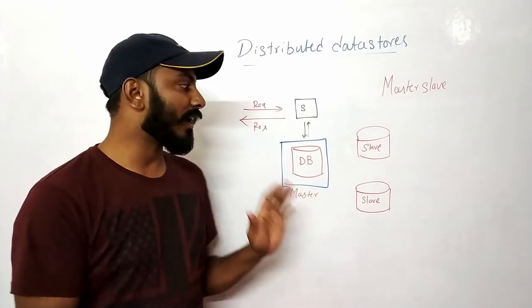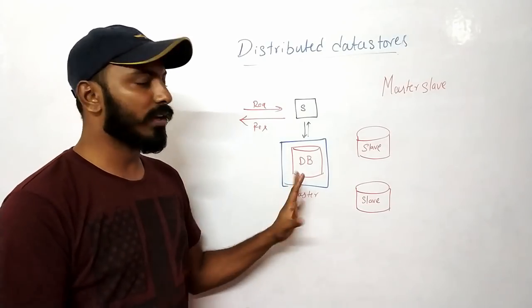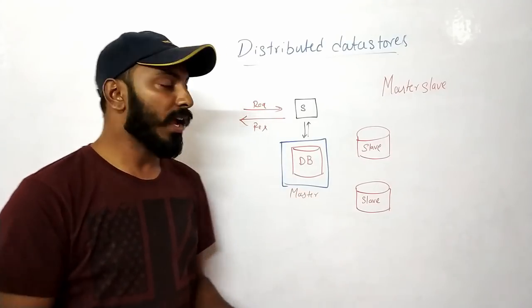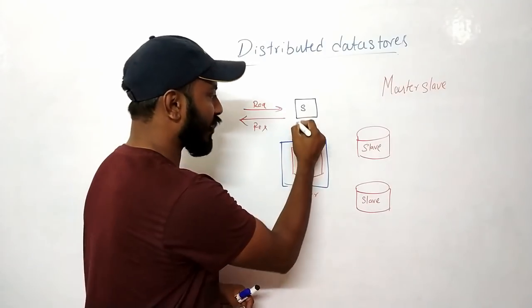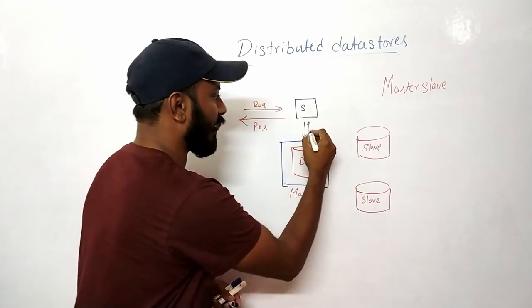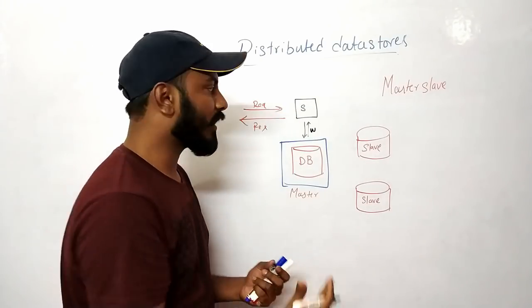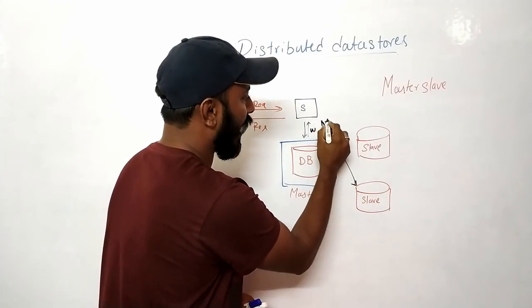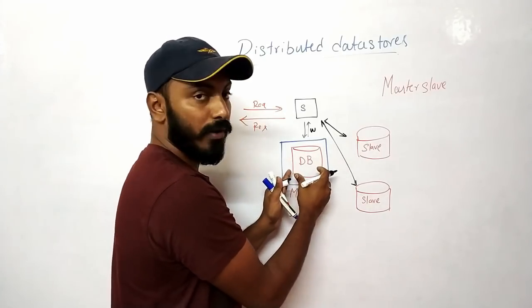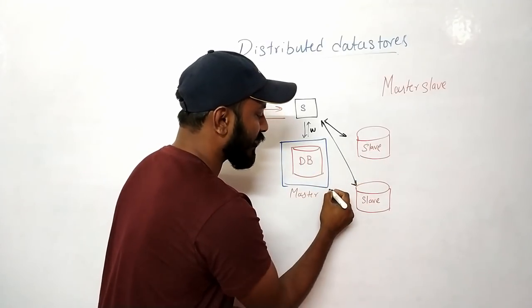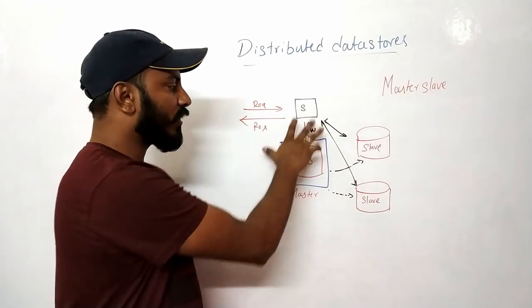One possible way to scale is using the master-slave strategy, where you have multiple instances of the DB. You have a master and a couple of slaves. Any write operation always happens to the master, and any read operation always happens from the slaves. Whatever is written to the master is then replicated asynchronously to all the slave servers.